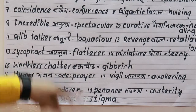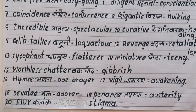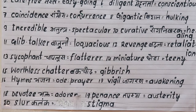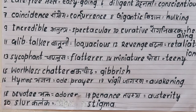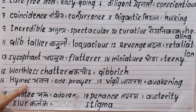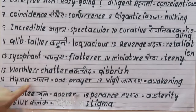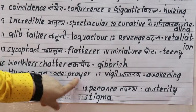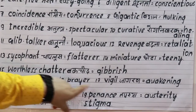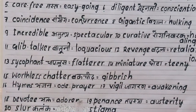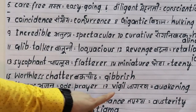Fifteenth is 'worthless chatter', meaning talking rubbish or nonsense. The synonyms are 'gibberish' and 'rubbish'. Sixteenth is 'hymns', meaning devotional songs or prayers — like bhajans, kirtans, or jagran. For example: today there is a jagran in my home.